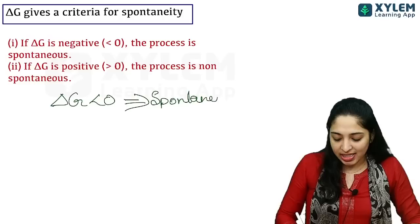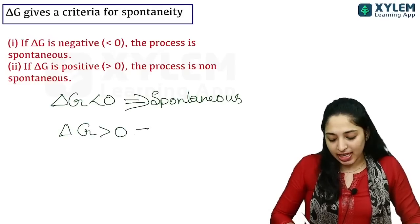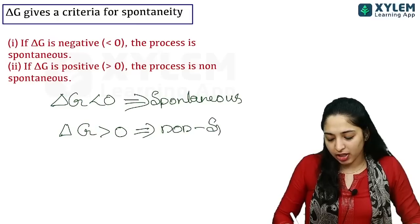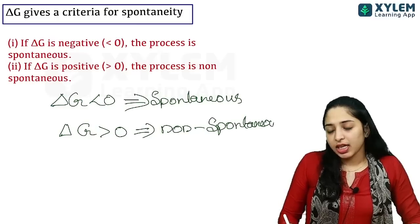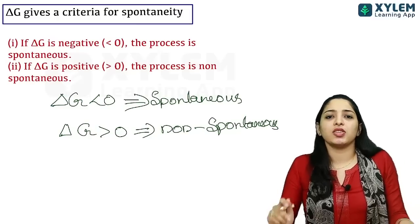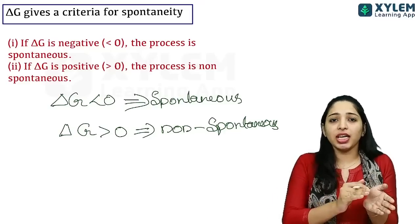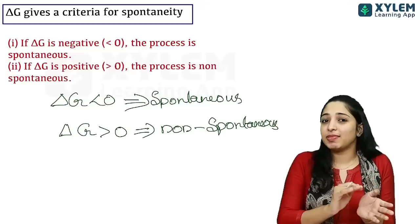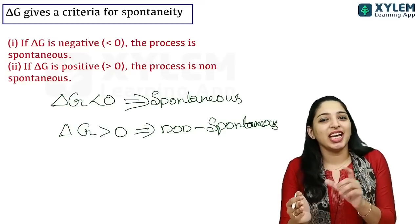Regarding the relation between Gibbs energy change and spontaneity: if delta G is less than zero, the reaction is spontaneous. If delta G is greater than zero, the reaction is non-spontaneous.